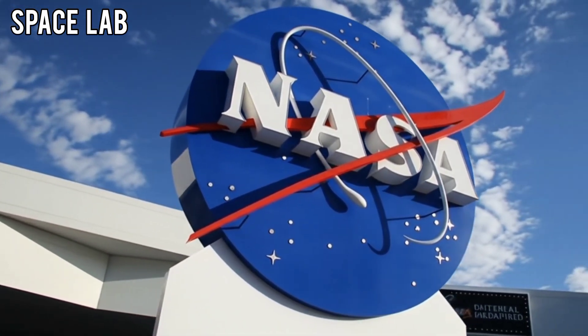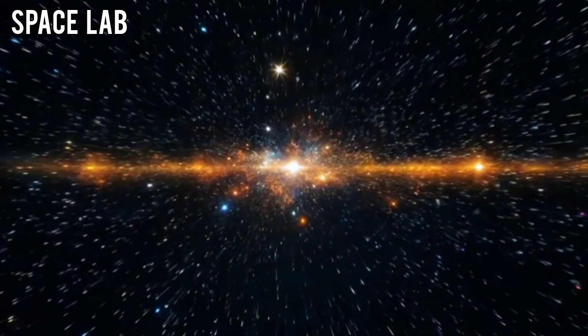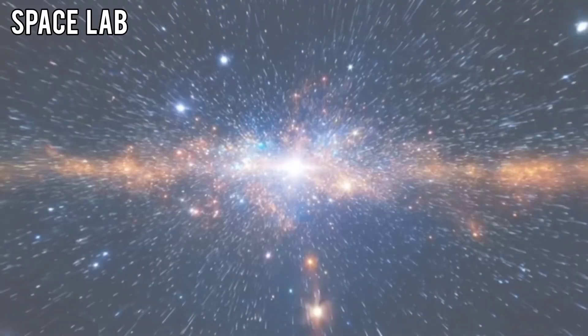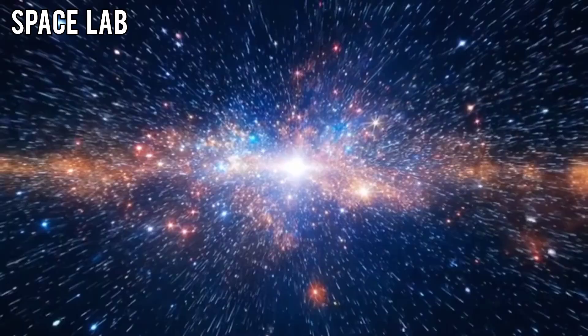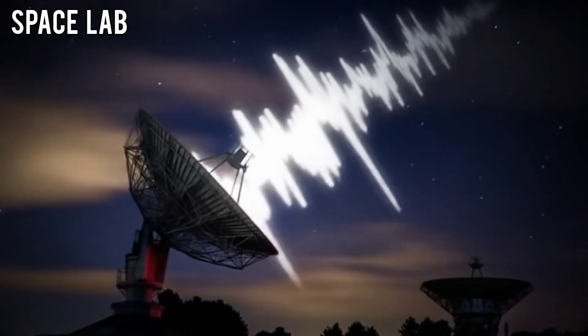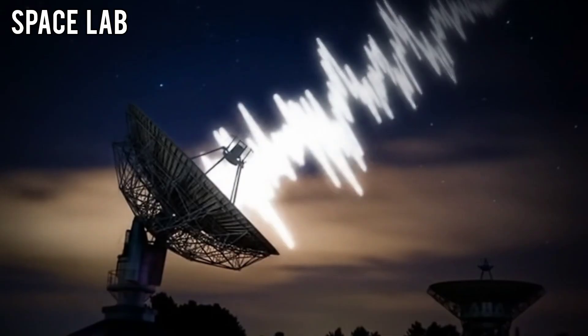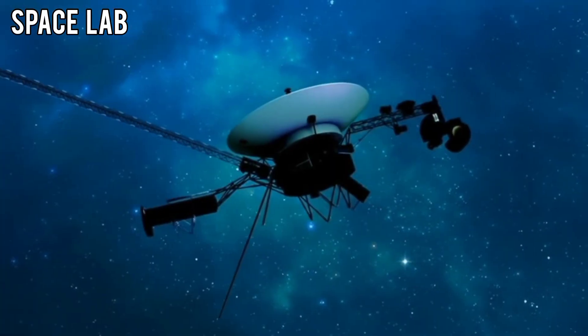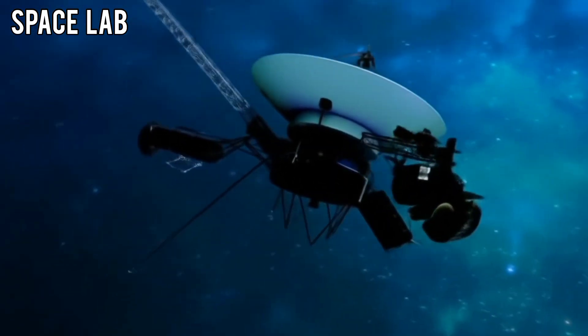Buried beneath the usual data, a faint irregular pulse emerged. At first, engineers thought it was interference, cosmic static from deep space. But when the signal was cleaned, patterns emerged. Rhythmic. Structured. Not random. Voyager 2 had never sent anything like this before.